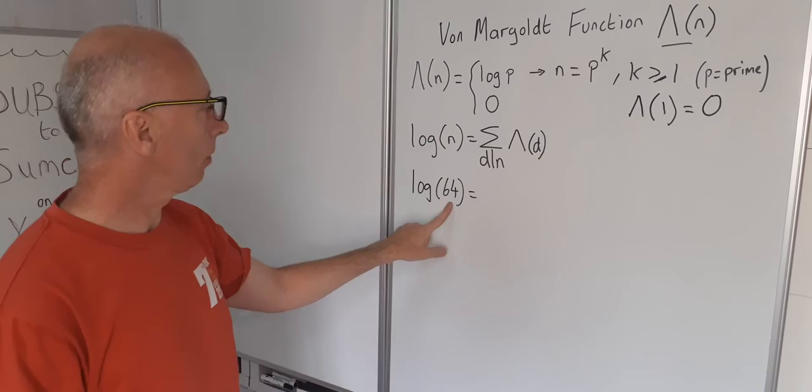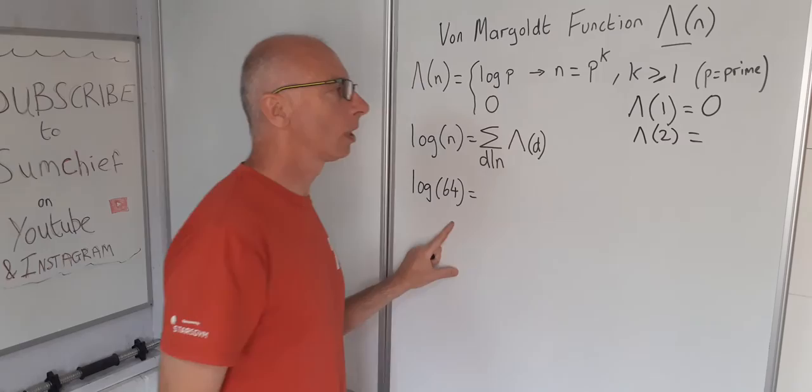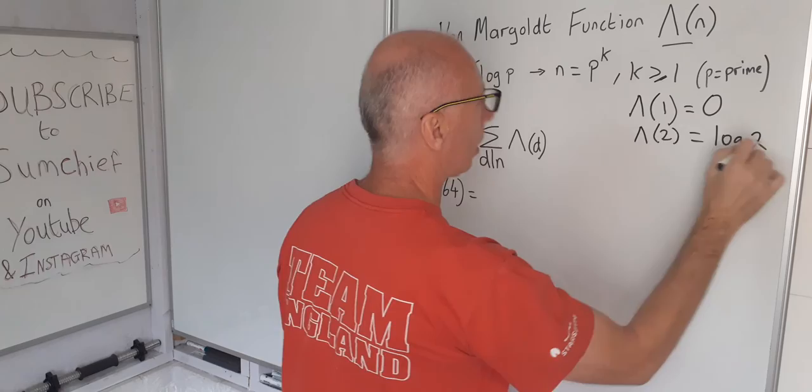The next divisor of 64 is going to be 2. So 2, 2 is a prime number, 2 to the power of 1. So therefore it gives the value log of 2 as in this case here.